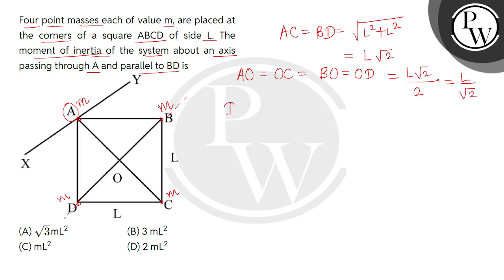Now we will find the moment of inertia of this system about the diagonal BD. For this, we will take first the mass situated at A, so its value is M multiplied by AO square plus the mass situated at B, that is M, but its distance from BD is 0, so this is 0 square plus.